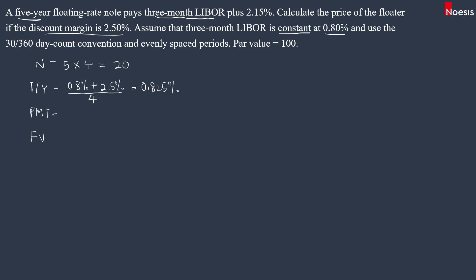For the coupon payment, that will be based on the coupon rate. The coupon rate is the 3-month LIBOR plus 2.15% — the quoted margin here is 2.15%. So we take LIBOR of 0.8% plus the quoted margin of 2.15%, divided by 4, and multiply by the par value of 100. This gives a coupon of 0.7375 per quarter, and the face value is 100.